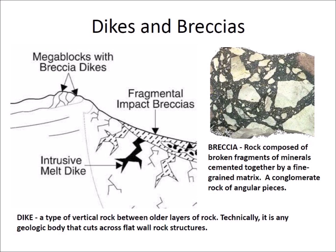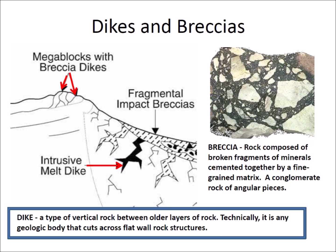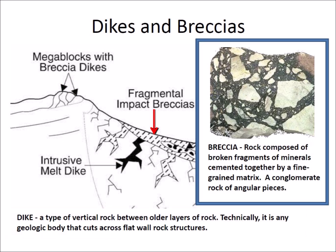A dike is a type of vertical rock body cutting between older layers of rock. Technically, a dike is any geologic body that cuts across flat wall rock structures. Breccia is rock composed of broken fragments of minerals cemented together by a fine-grained matrix — it is a conglomerate rock containing angular pieces.